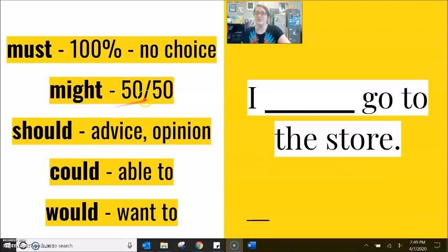If I use might, this is 50-50. I might go to the store. Half. We don't know. I should go to the store. This is a good idea, but I can choose. With must, there is no choice. I must, have to, need to, required. With should, it's a good idea, but I have a choice.